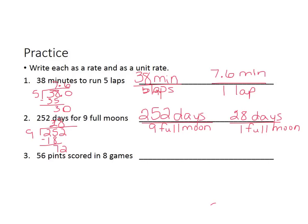Number three. You have 56 points scored in eight games. So you would write 56 points in eight games. Now to find the unit rate, you would take 56 divided by 8. 8 goes into 56 seven times. So your unit rate would be 7 points for one game.